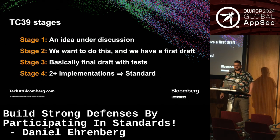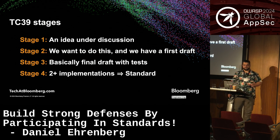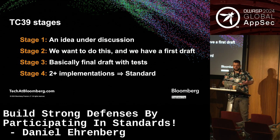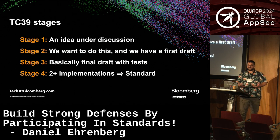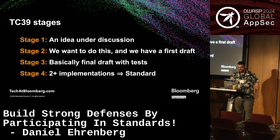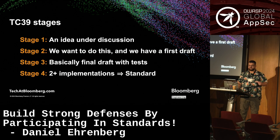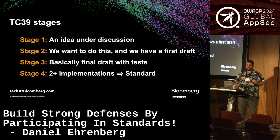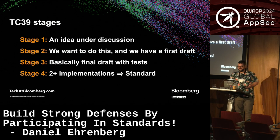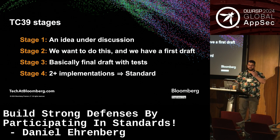TC39, when it makes changes to JavaScript, has a process of four stages that proposals go through. In stage one, an idea is brought under discussion. At stage two, the committee decides to move in a direction and produces a first draft. At stage three, we have a final draft with tests. And at stage four, something is fully and broadly implemented and part of the standard.